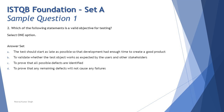Option A: 'the test should start as late as possible.' When preventing defects is one objective, we should start testing as early as possible, with help of static testing, which begins much earlier in the lifecycle. We have never learned anywhere in the syllabus that you should do late testing. So that can be ruled out. Even the extended version — 'so that development had enough time to create a good product' — doesn't hold up, because quality is measured by testing, not by development time alone.